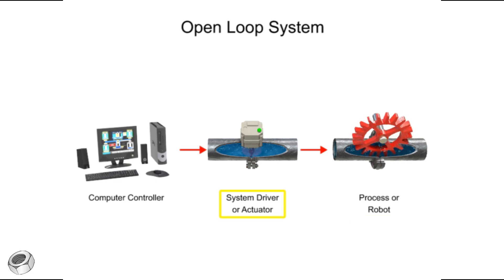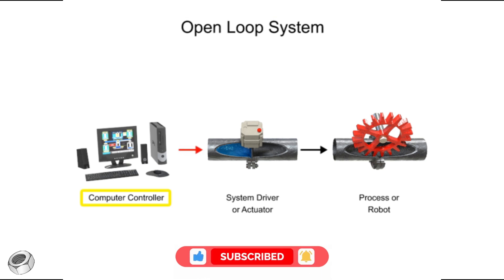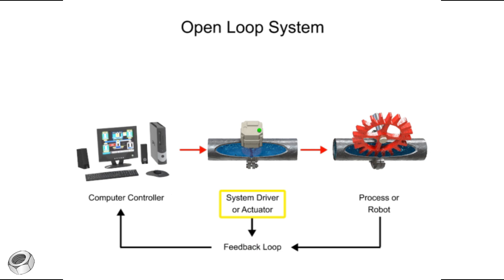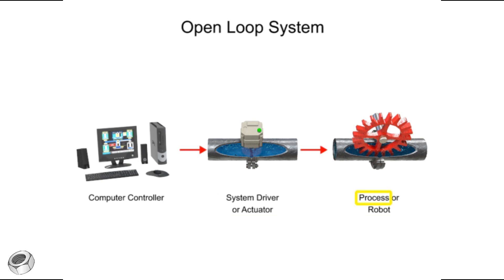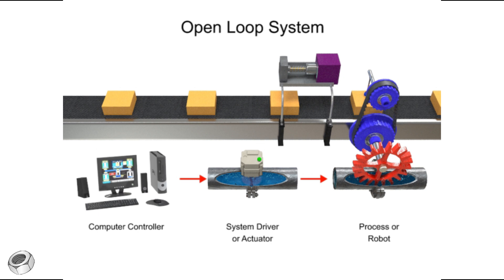The system driver can be anything from a pneumatic actuator, a hydraulic flow valve, or an electrical controller. In open-loop systems, the length of time the signal is applied as well as the integrity of the signal are critical for ensuring that the new operation is completed. This is because there is no feedback to the computer from the system driver or the robot, and thus no updates to the signal outputs can be made. The term 'process' in this illustration simply means any piece of equipment that accomplishes work — this could be a robotic arm, a motor, or an engine.